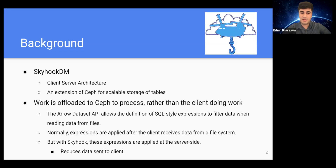The Arrow dataset API allows the definition of SQL-like expressions to filter data when reading from files. Normally these expressions are applied after the client receives the data from a source or file system. But with the Skyhook project, these expressions are applied at the server side, because Skyhook creates custom read methods added to Ceph that allow the storage layer to execute these methods on data when read from local disk. This offloads computation to storage servers, reducing the data sent to the client over the network, and all the work is distributed across multiple storage servers.